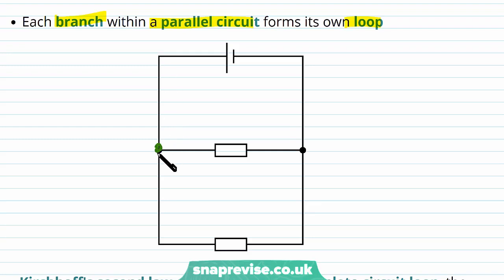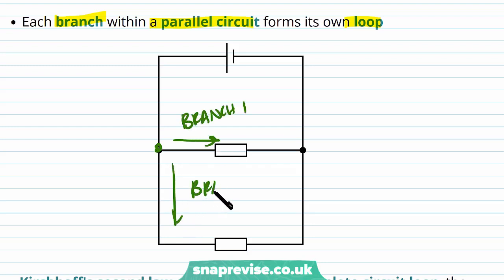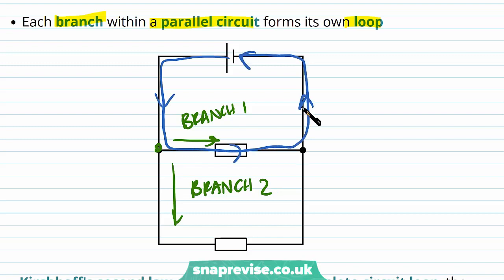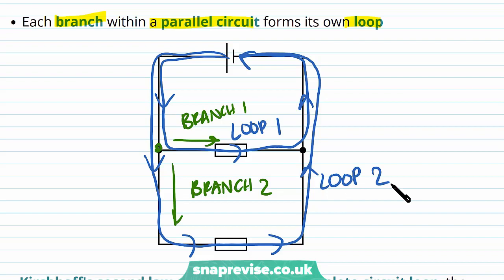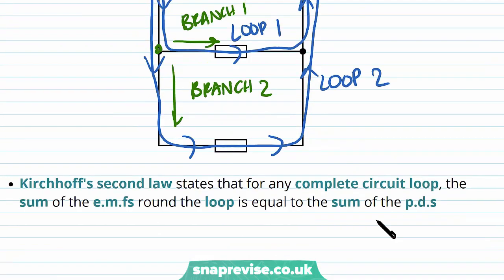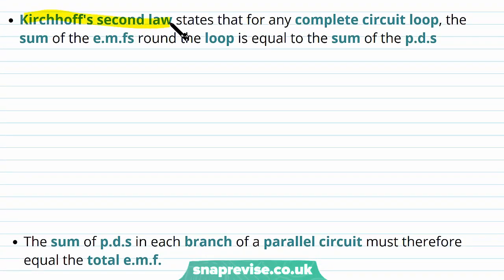Each branch within a parallel circuit forms its own loop. At this junction, the circuit splits off into two branches — branch one and branch two. The two branches provide two separate loops: loop one going via branch one, and loop two going via branch two. So each branch provides its own loop.